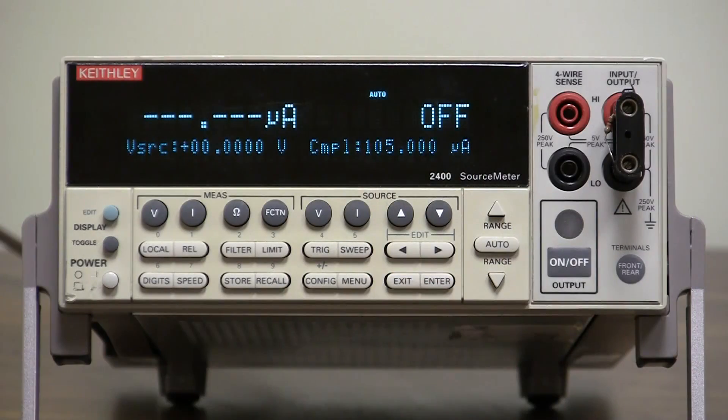Hello, this is a short instructional video on how to set the limits on a model 2400 source meter. The model 2400 source meter has limits that you can set for voltage, current, or resistance readings, and the limits can be used as a pass-fail kind of test.